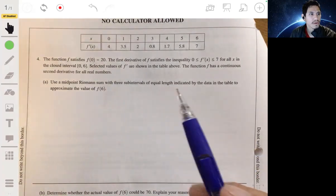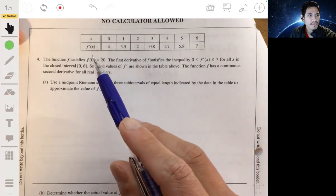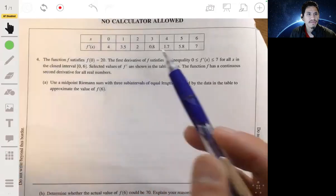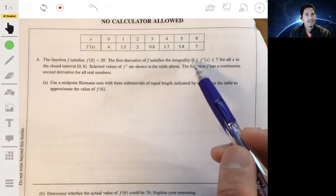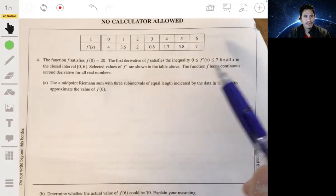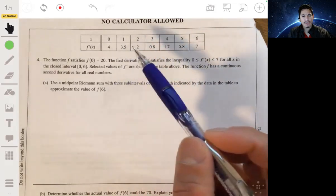Alright, problem four. We got this function f that satisfies f of 0 being 20, and the first derivative of f satisfies the inequality of f prime being between 0 and 7 for all x in this closed interval 0 to 6.